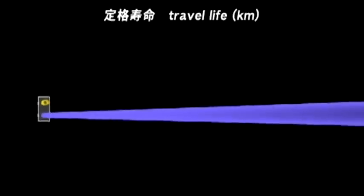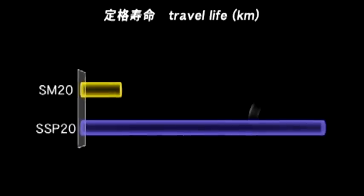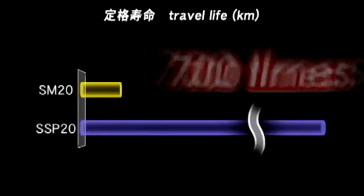Compared with the same size ball bush, the NB ball spline provides approximately 700 times greater travel life.